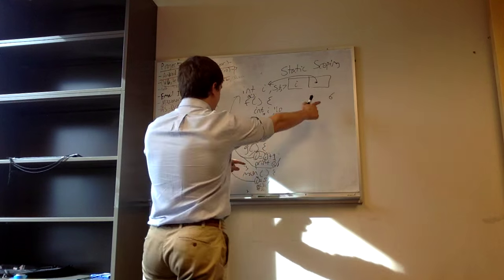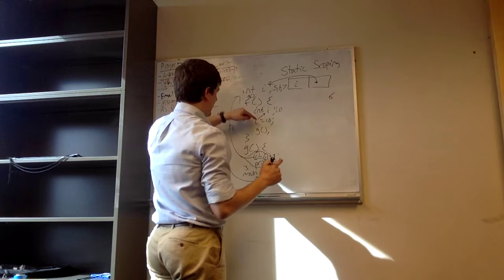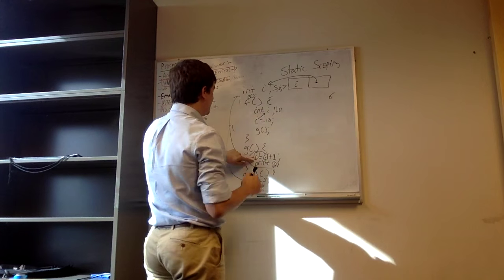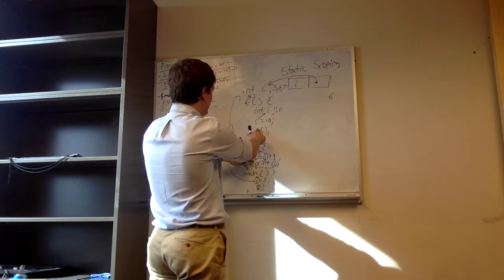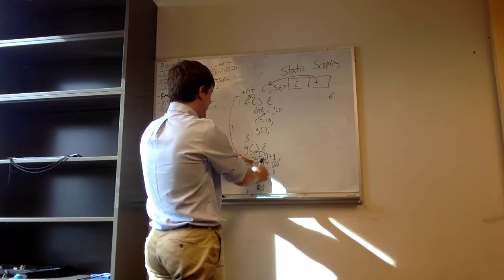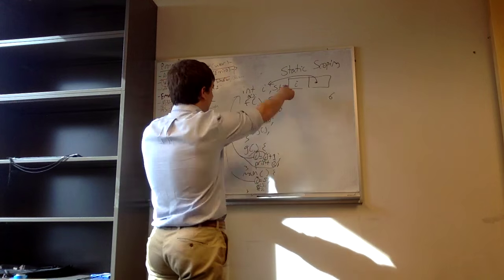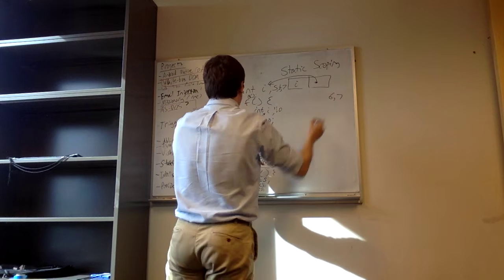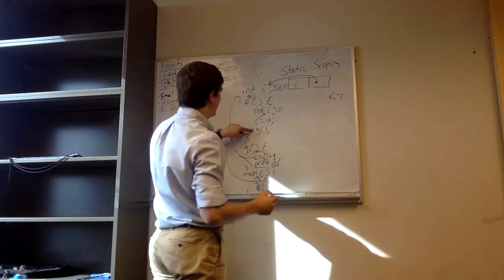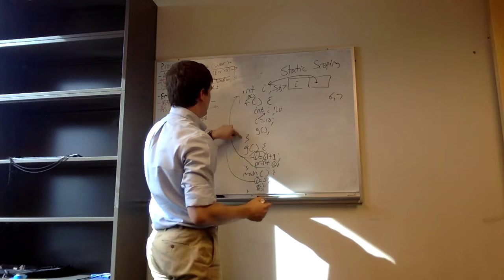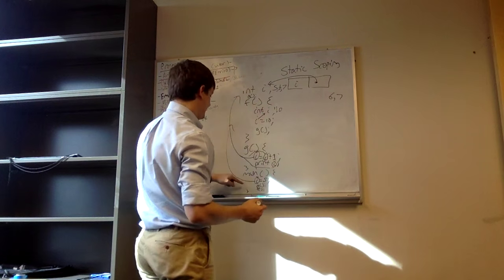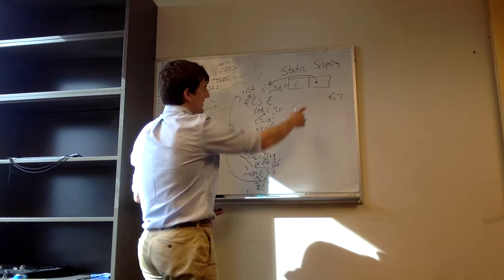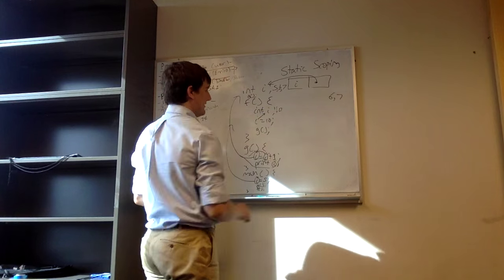So we printed out 6. Now we're in f, set local i to 10, call g — we're in g from f, and now we're incrementing that local i from 10 to 11... wait, with static scoping, we increment the global i, not the local, so it goes to 7. We print out 7, come back, leave f, leave main. So we printed out 6 and then 7.